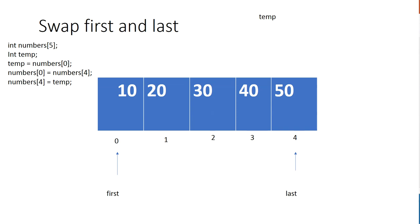Last time we looked at this array, I had you guys swap the first and last elements. We're going to build upon that problem, except now we're going to swap not only the first and last, but then move the swap inward — incrementing the first pointer by one and decrementing the last pointer by one — so we can swap 20 and 40 as well, giving us 50, 40, 30, 20, 10.